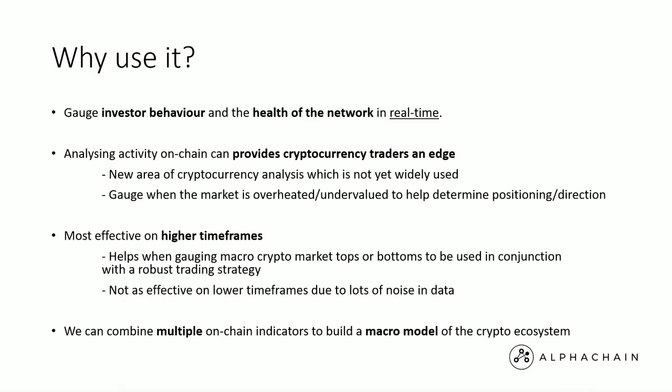Analyzing activity on-chain can provide cryptocurrency traders with an edge, which is exactly why we put this in the program. Using this in collaboration with your underlying trading strategy can really provide you with an edge. On-chain analysis shouldn't be used as a pure trading signal — it can be quite noisy and is generally not as effective on smaller timeframes. It's far more effective on higher timeframes like daily, weekly, and monthly, mainly because the data is so noisy and we want to see those trends over time — the growth in the network and the changing themes in how the network is growing.